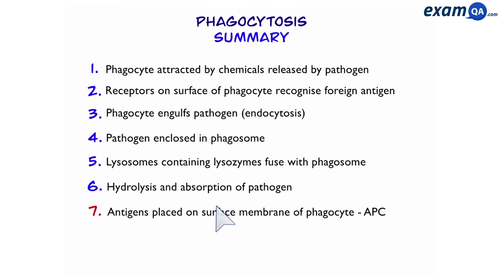The last step — step seven — where antigens are placed on the surface of the phagocyte turning it into an APC, is not technically part of phagocytosis. However, it is important to know because this is what will be used when starting the next stage, which is T cells.